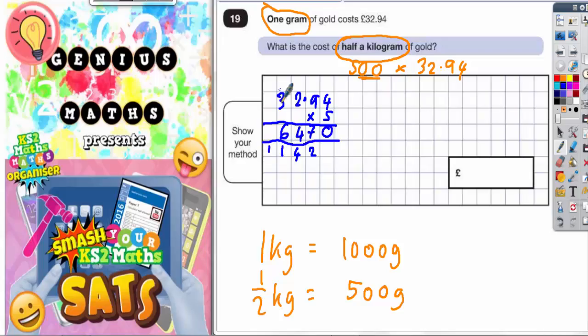And 5 threes are 15, plus that 1 is 16. Put the 6 in, carry the 1. But because you've finished now and you've reached the end column, that 1 can just go in. Put your decimal point in, so it's lined up with this decimal point. So actually, 5 grams of gold would be £164.70. So let's just make that nice and clear. £164.70 for 5 grams.